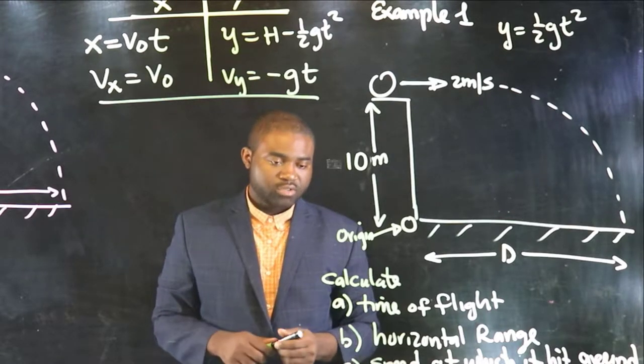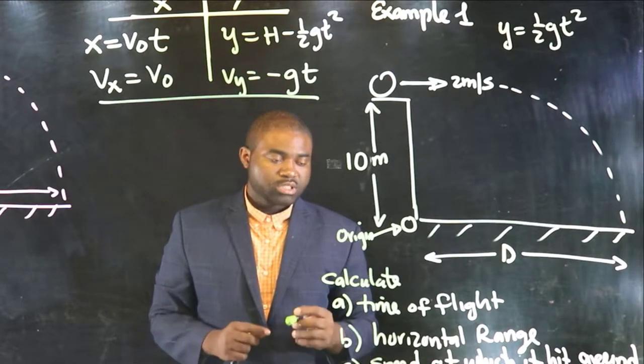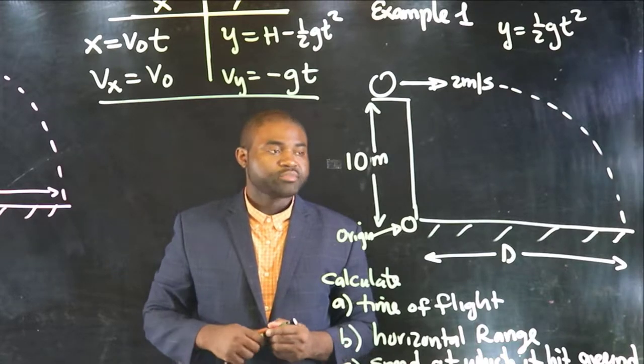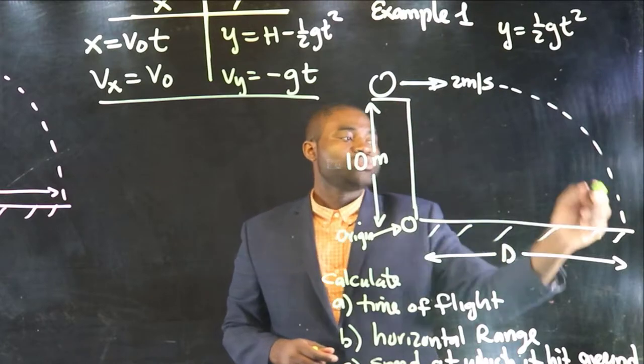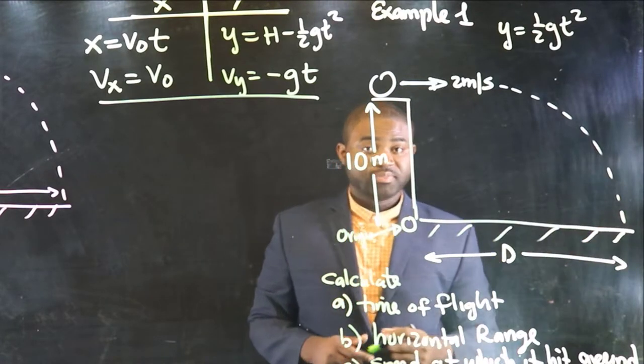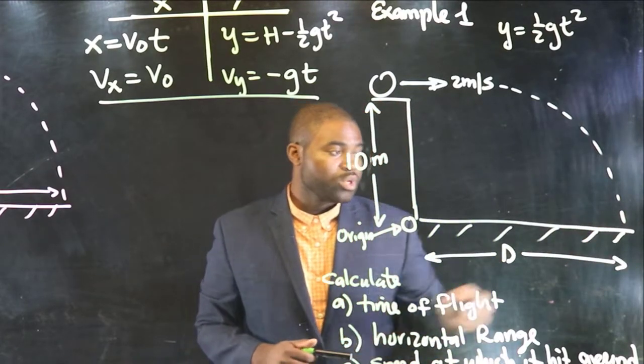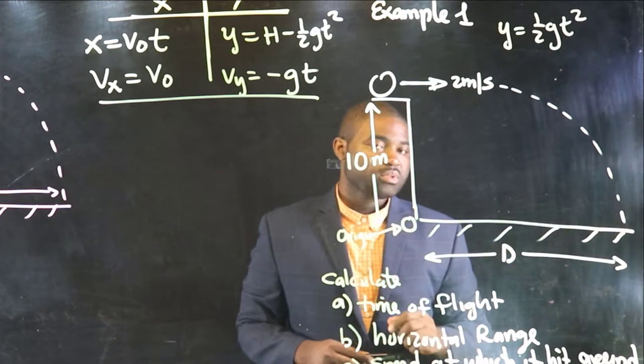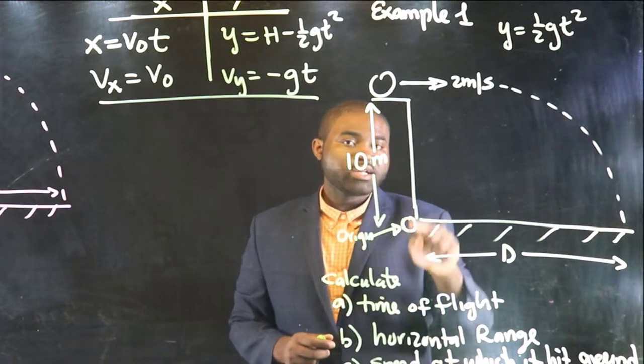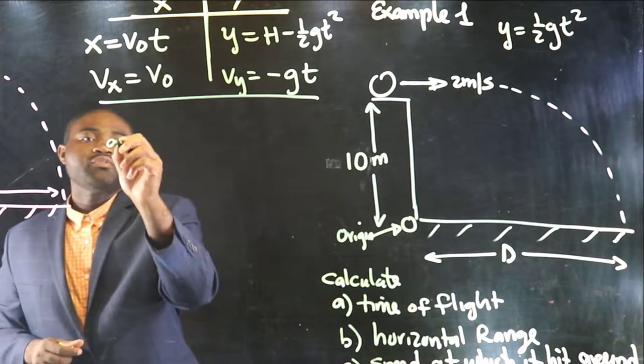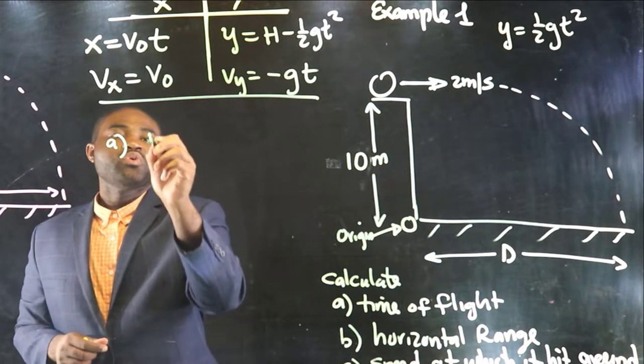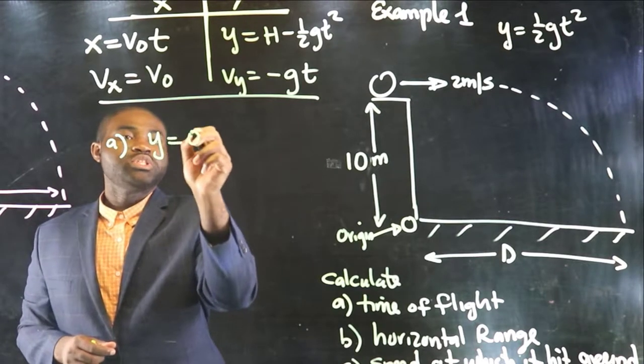So, let's tackle the first problem. Let's calculate the time of flight. That is the time from launch to when the ball hits the ground. Notice something. When the ball hits the ground, what happens? The y distance is zero. So, we know that for the time of flight, y is equal to zero.